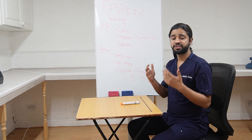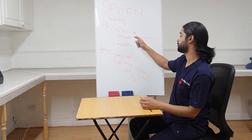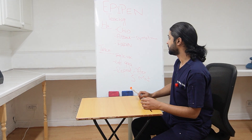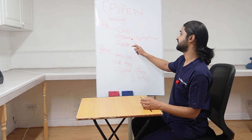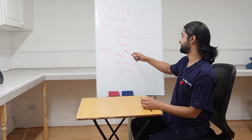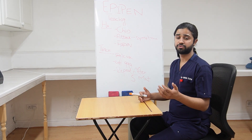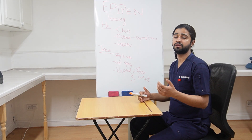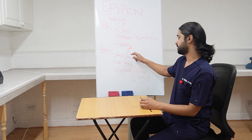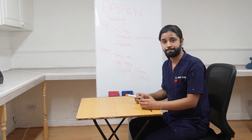First of all, we take a short history regarding the child — is he at an appropriate developmental stage, happy and playful normally? Then we will take history regarding the attack, whatever symptoms the child was showing at the time, such as lip swelling, tongue swelling, shortness of breath, or any wheezing sounds. We also need to ask how much the parent already knows about the EpiPen.